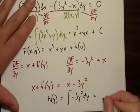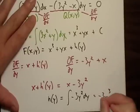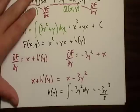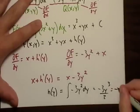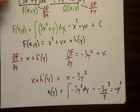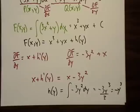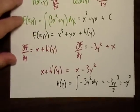Which is just negative three y over three, which simplifies just to negative y cubed.